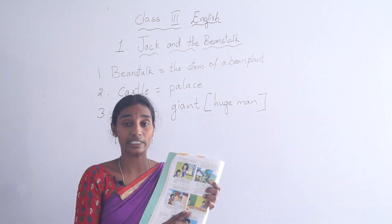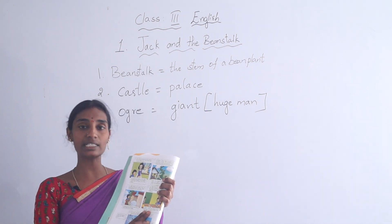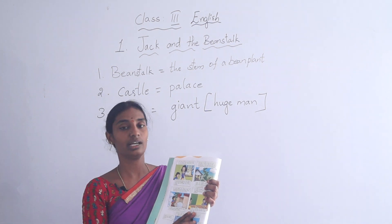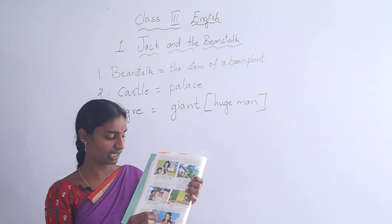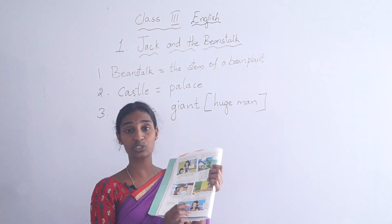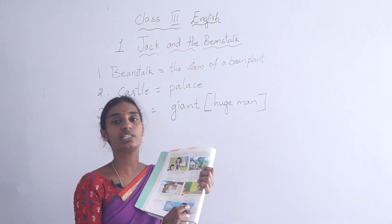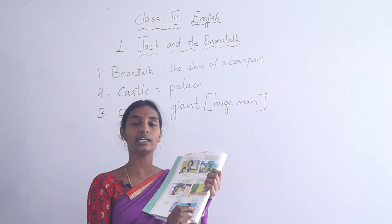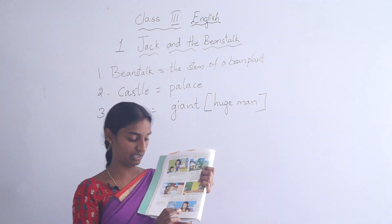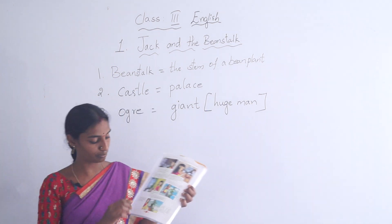She said: 'Eat fast, otherwise Ogre will come and he will eat you up. Ogre likes kids a lot and he will never leave you.' Meanwhile, she heard the ogre coming to that room. So quickly the ogress took the boy and hid him behind a trunk. Now the ogre entered into the dining hall. Up to here, it is there in the next page.